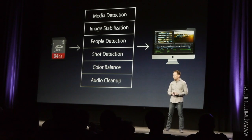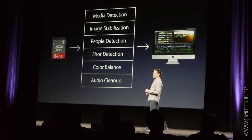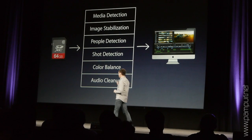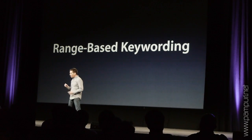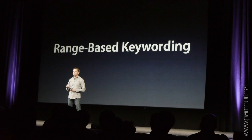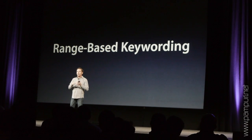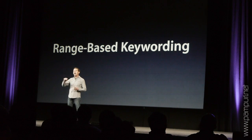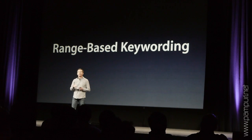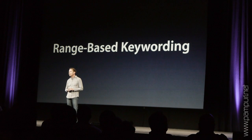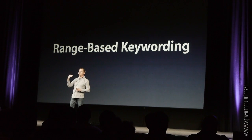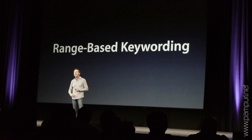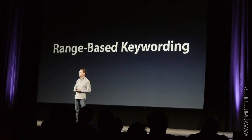So that's content auto-analysis. Which brings me to the next thing I want to talk to you about, which is range-based keywording. Think about how you do organization in NLEs today — it's a very static process. You put a clip in one bin or another bin. If you need to find it based on multiple criteria, you end up copying it in multiple different places or doing sub-clipping and a whole bunch of other things. With range-based keywording, you can apply multiple different criteria to your media and then go back and find it based on what you remember about it.